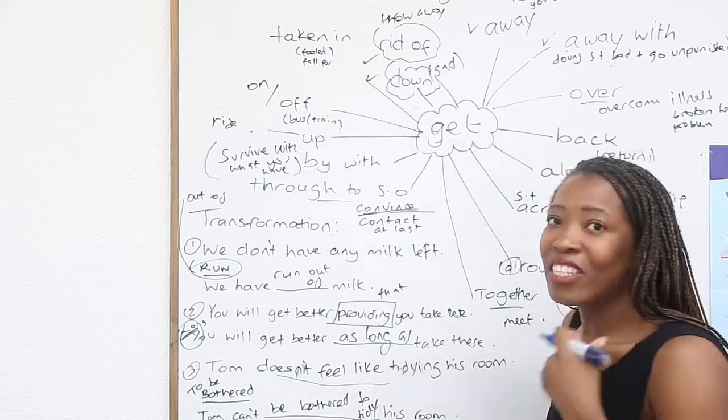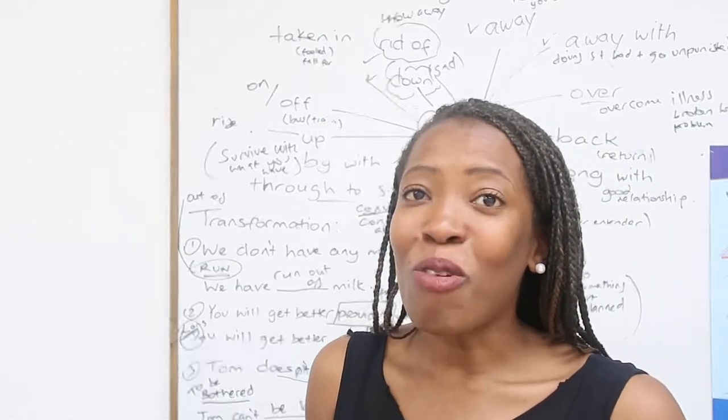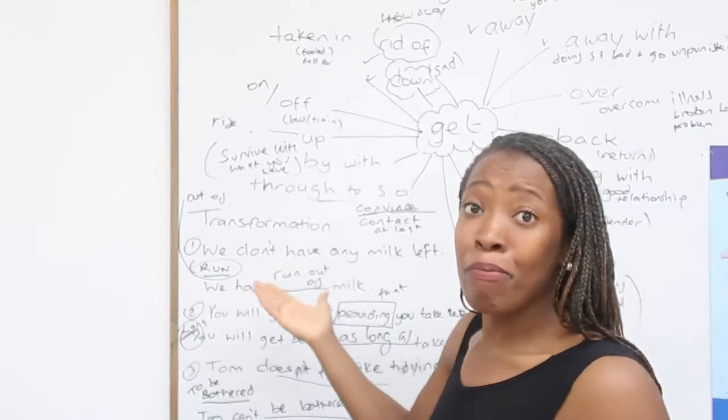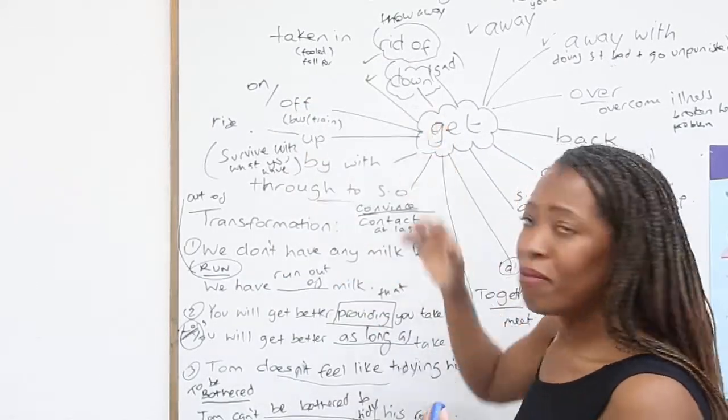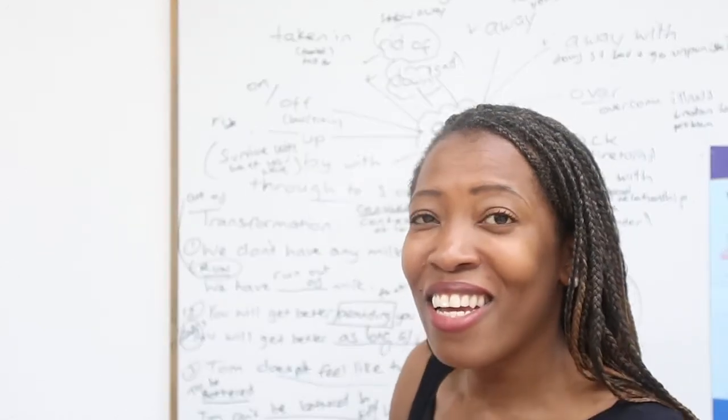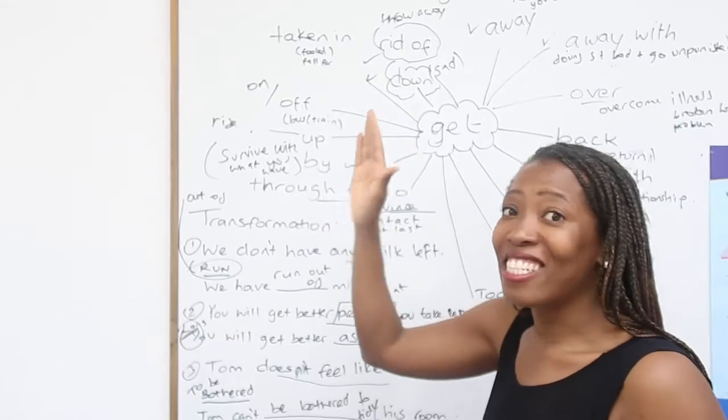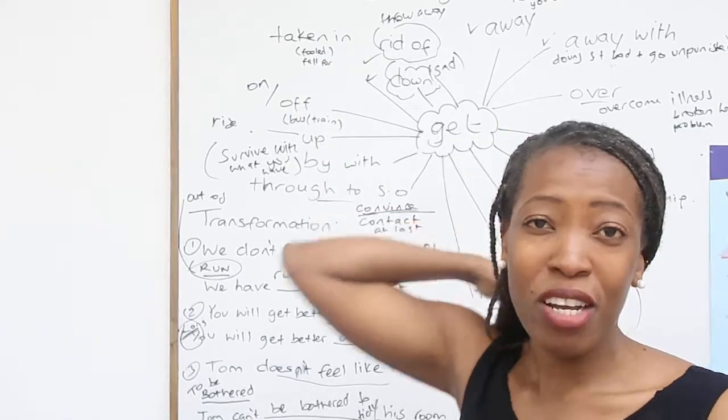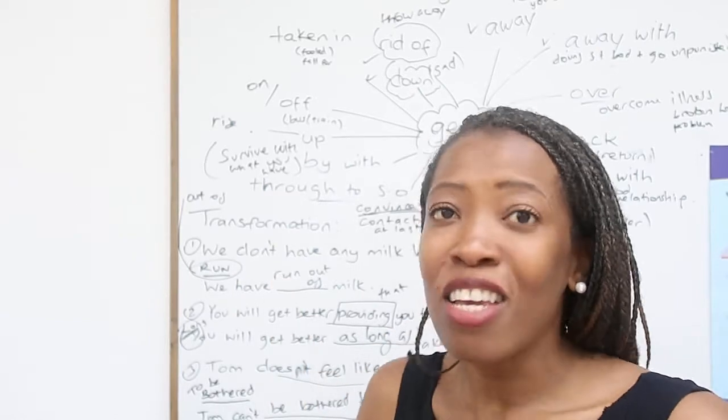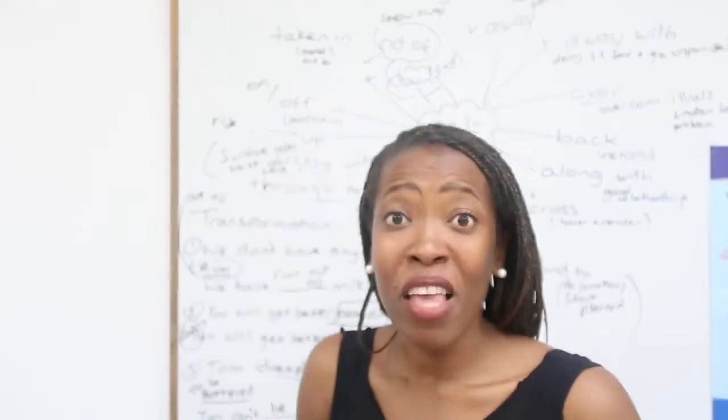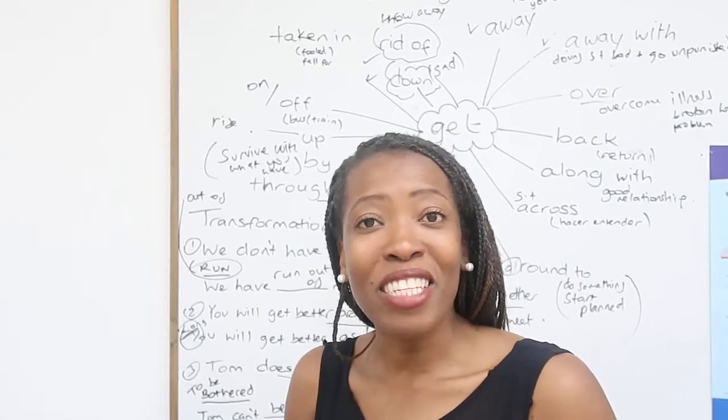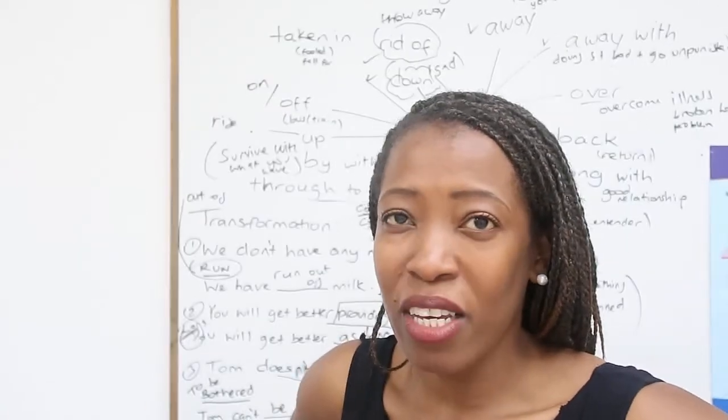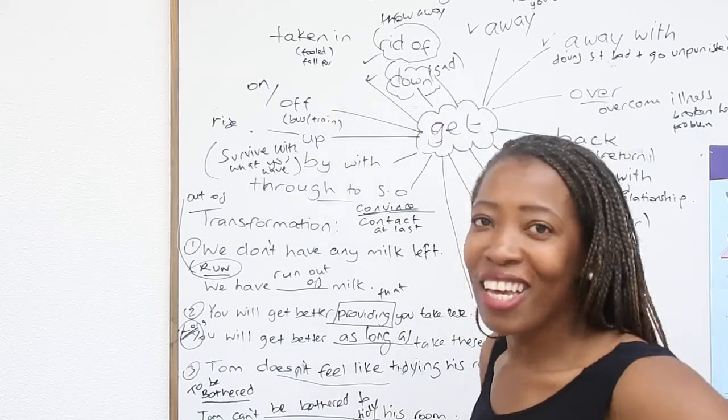And the last one is taken in. To get taken in. Now this one perhaps is not as common as all of these, but we use it a lot in Britain at least. To get taken in is when in Spanish te engañan. Cuando te engañan. Engañarse. Dejare engañar por allí. So it's when you manage to be fooled by someone. You get taken in. You fall for what they've said. You've got taken in. So an example: I got taken in by all that nonsense that he told me. So I fell for all that nonsense that he told me.